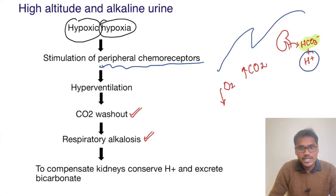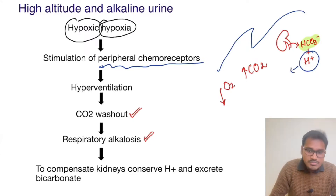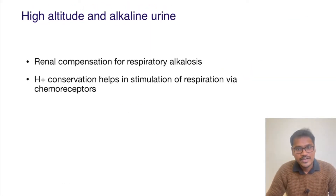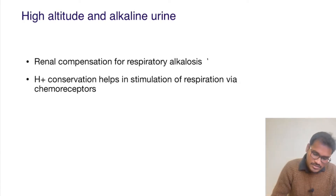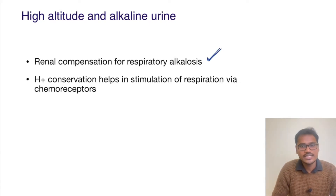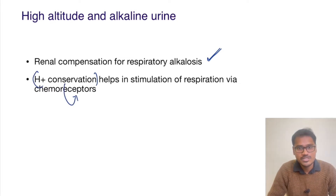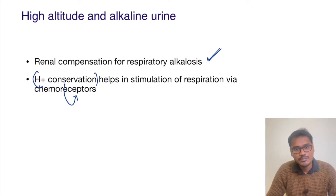As we conserve more and more H+, it can stimulate the chemoreceptors and there can be a reversal of the respiratory drive — so respiration can increase again. To revise: the renal compensation for respiratory alkalosis is the reason for urine alkalinity, and the conserved H+ helps in further stimulation of the chemoreceptors, leading to respiration. I hope it's clear. Thank you for listening — drop your doubts in the comment section and I'll be happy to make a video on it.